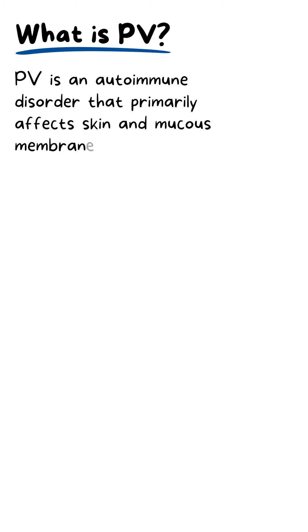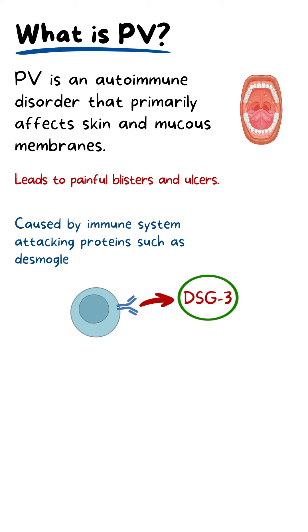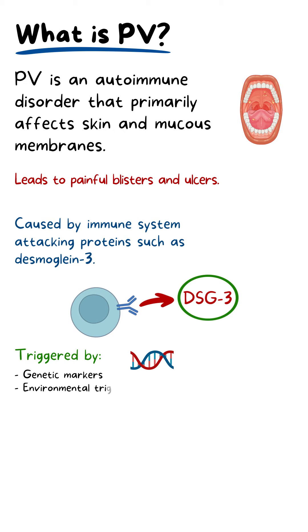PV is an autoimmune disorder primarily affecting the skin and mucous membranes, leading to painful blisters and ulcers, often first appearing in the oral cavity. It is caused by the immune system attacking specific proteins, especially Desmoglein 3. The disease onset is influenced by genetic markers, environmental triggers like UV radiation, and potential hormonal changes, especially in females.